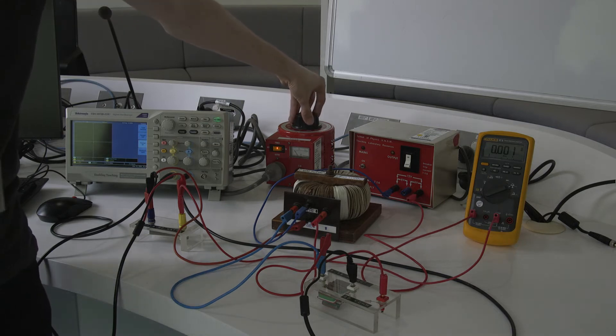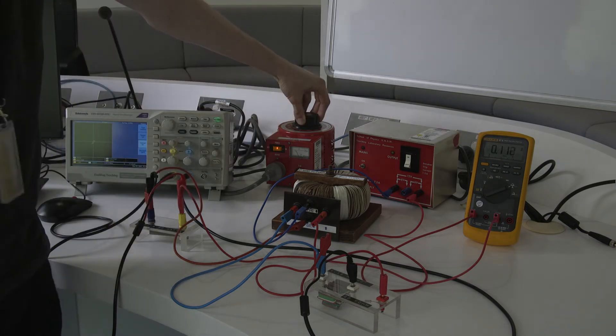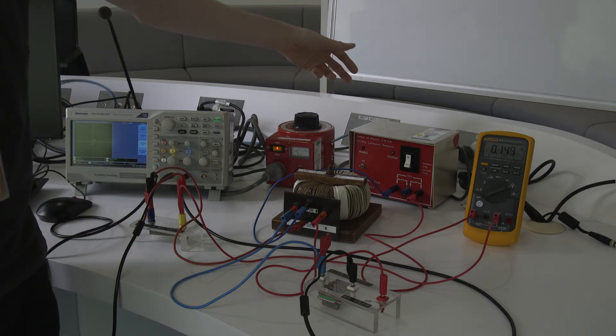If I start increasing the voltage of the supply here, you'll notice that the current flowing through the primary coil increases, and that is changing the magnitude of the magnetic field being induced by the primary coil.